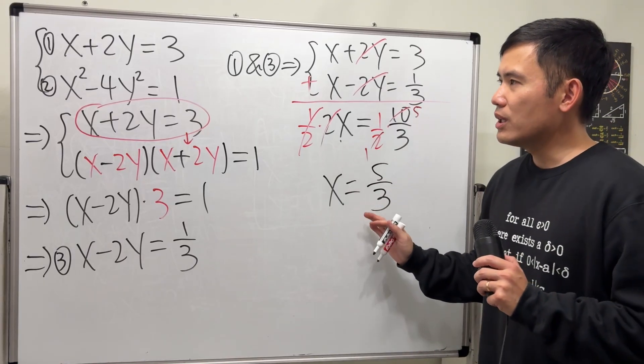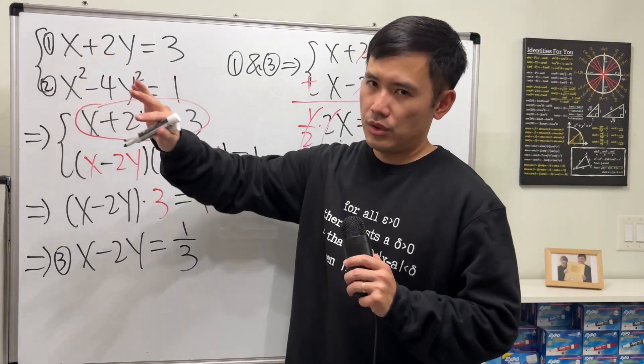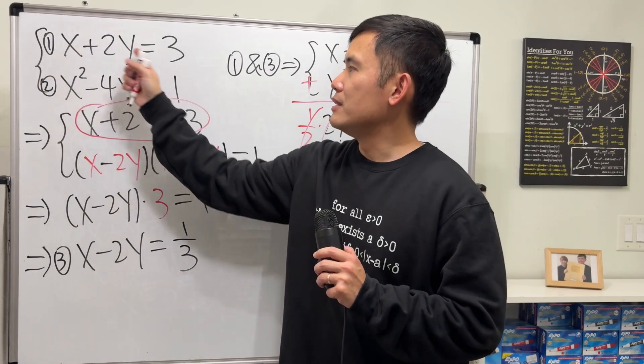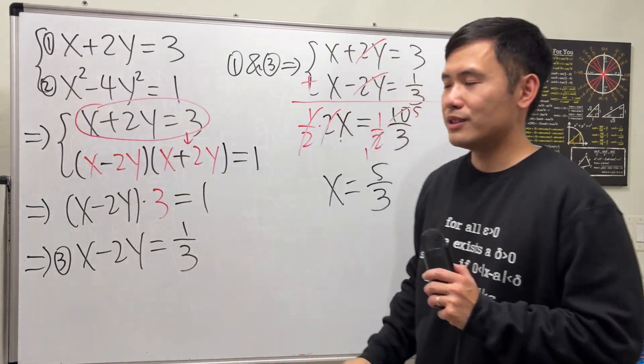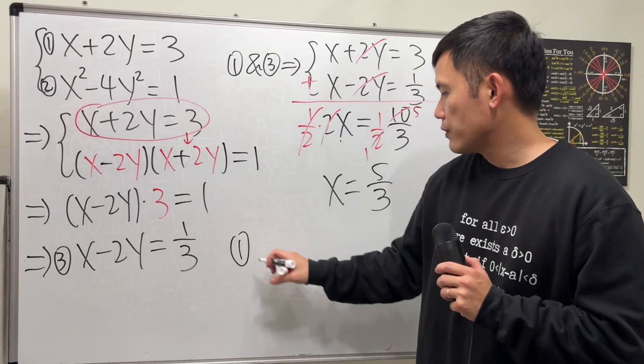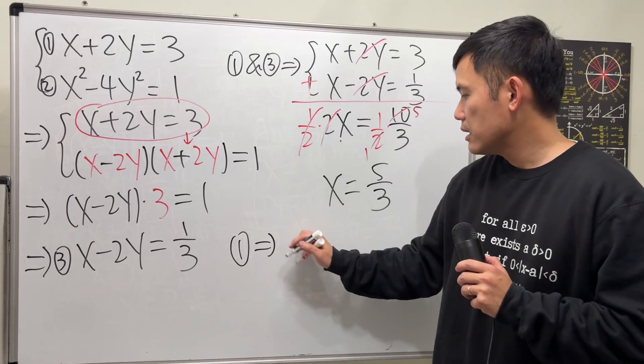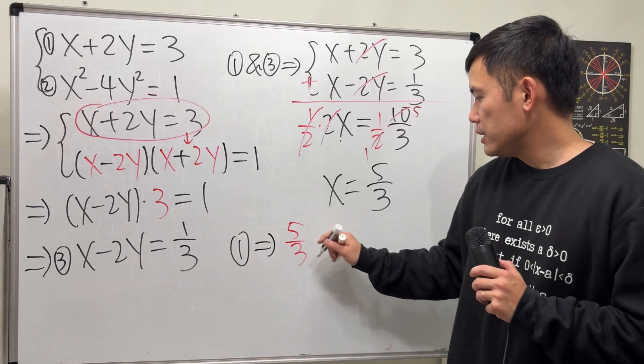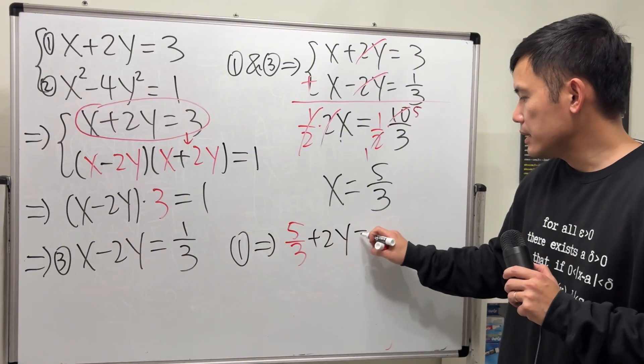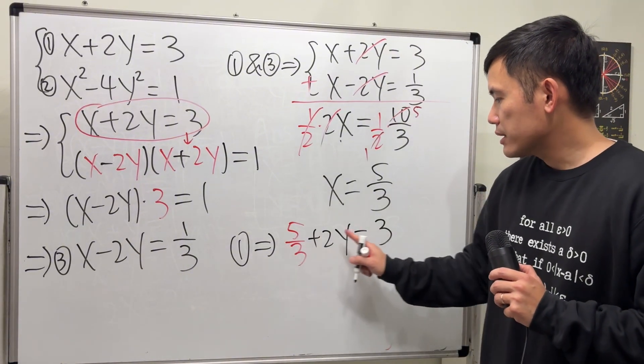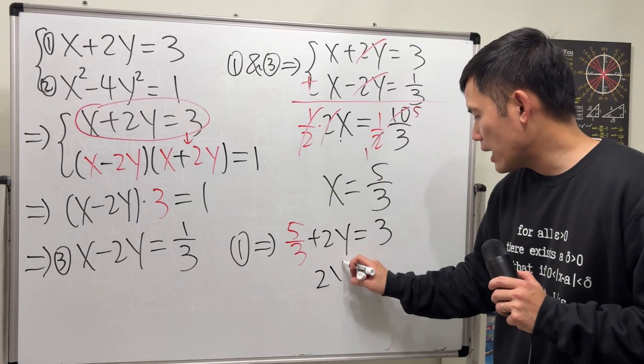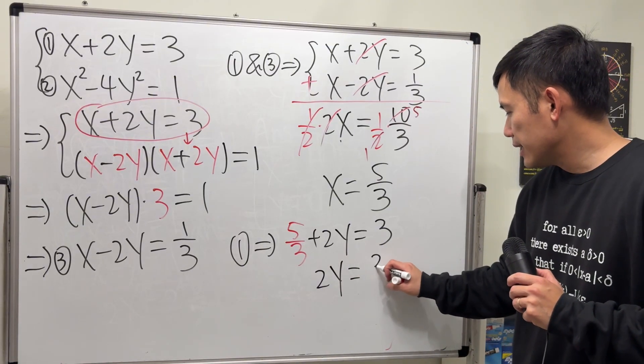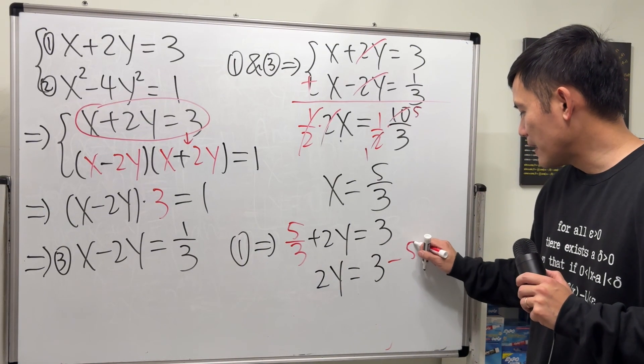Now once we have this, we can plug it into the first equation. Totally use the first equation because it's easier, of course, if we don't have the exponents. For number 1, we get 5 over 3 plus 2y equals 3. Subtract this to both sides. So we get 2y equals 3 minus 5 over 3.